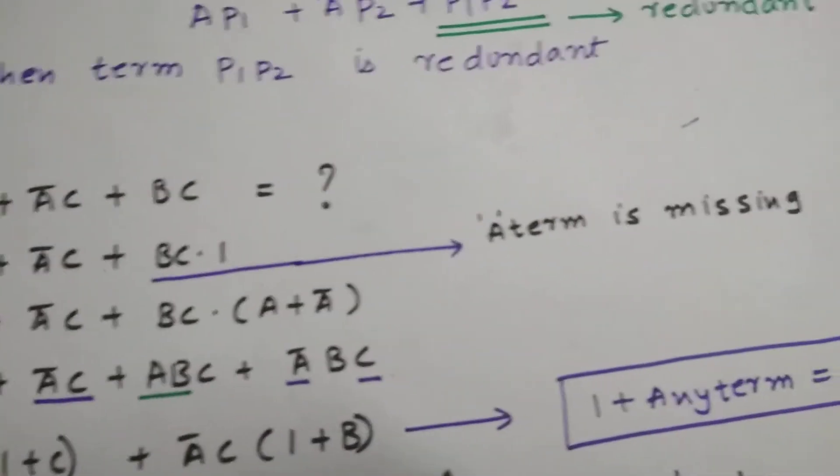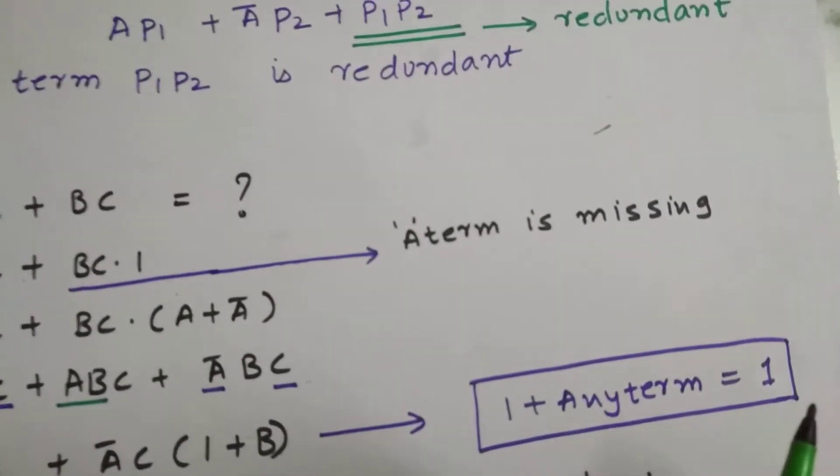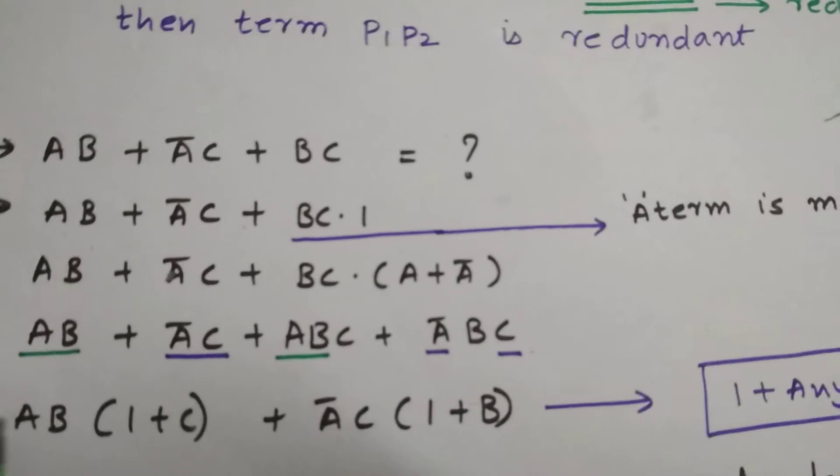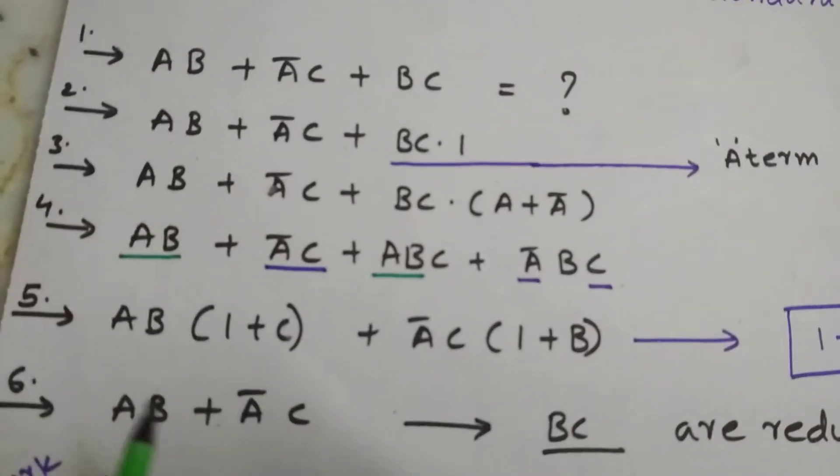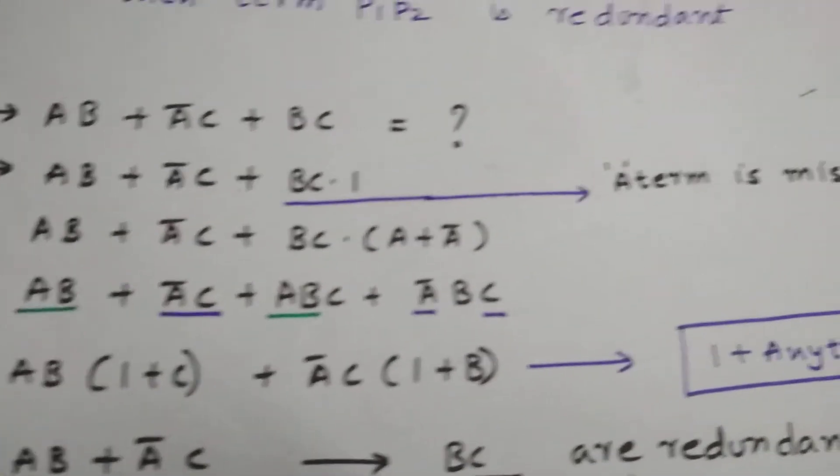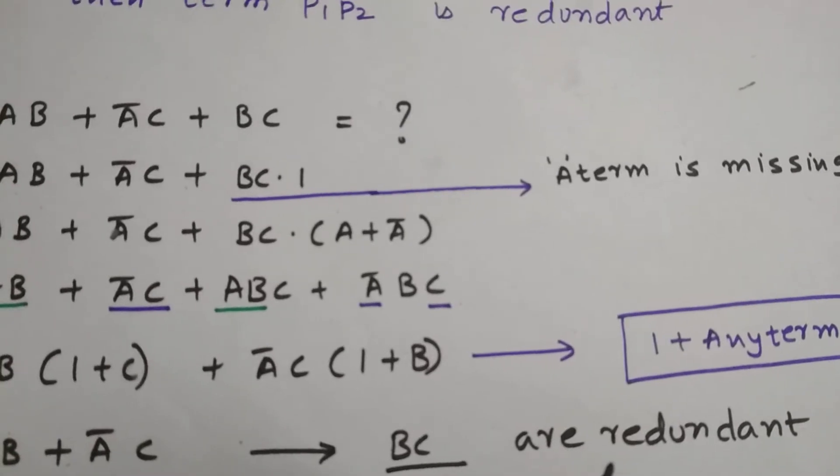As you know that 1 plus any term is equals to 1. So this equation will lead to AB plus A bar C. So as we can see that B and C are redundant terms.